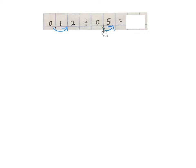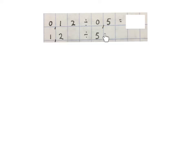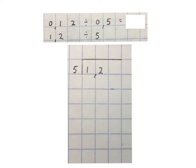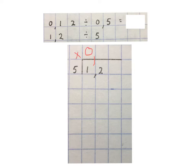Move the comma to the right the same amount of places in both numbers until the divisor doesn't have a comma in it anymore. This number becomes 5 and this one becomes 1.2. Then we do a normal division sum — write the division sign, put the divisor on the outside, dividend on the inside. Because there's a comma in here, I put the comma above in the answer.